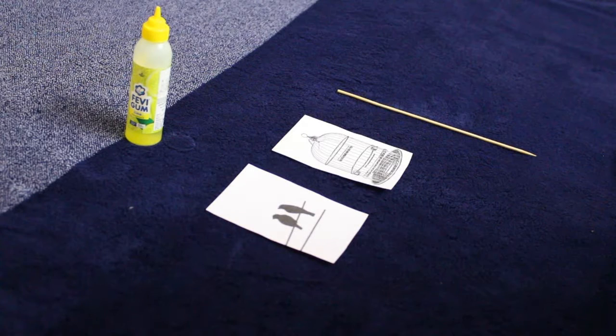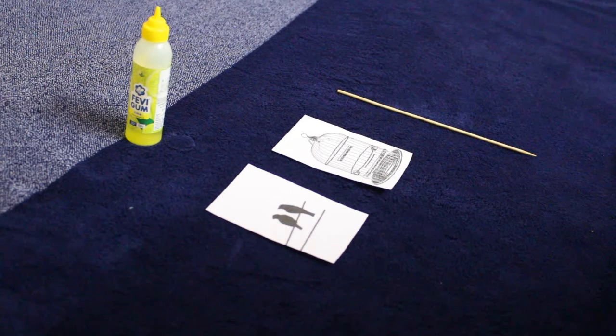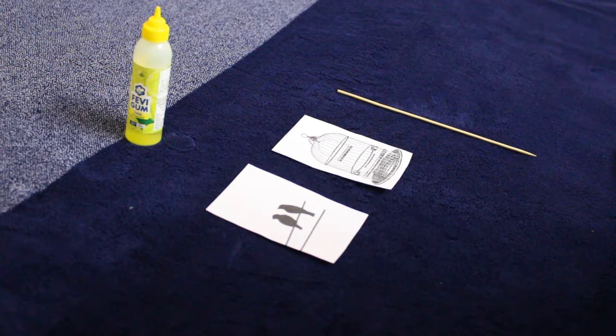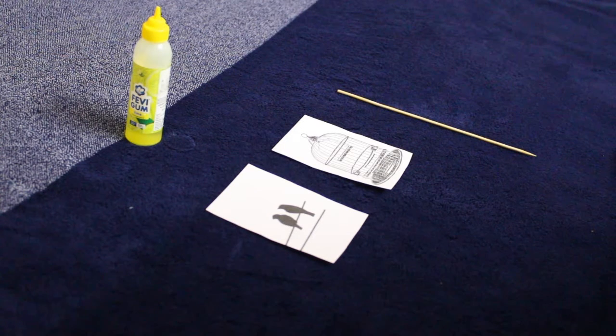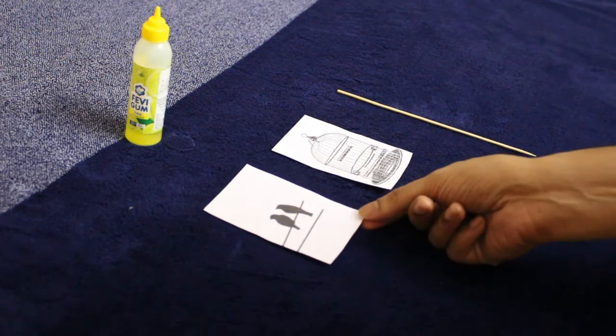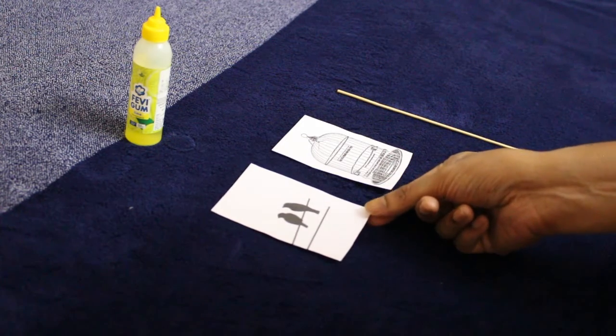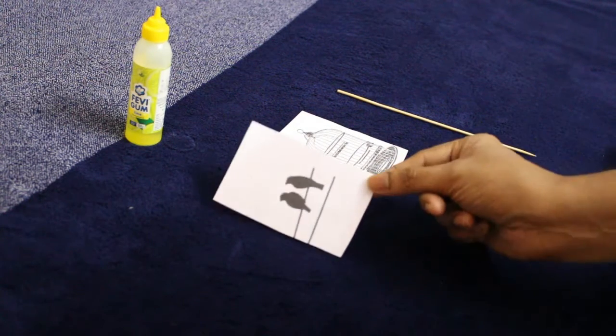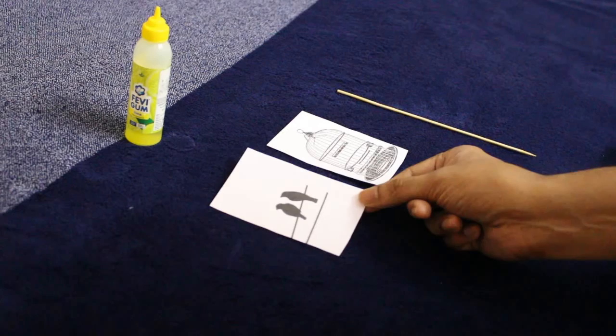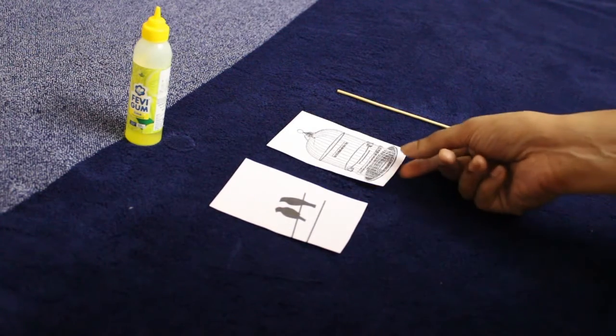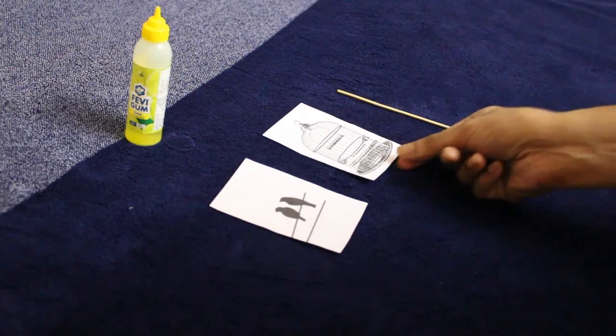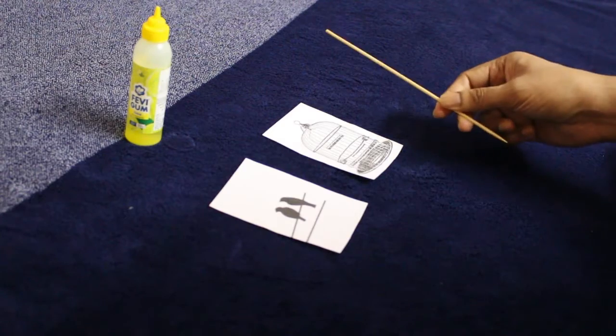Hello everyone, today I'm going to show you a simple experiment on optical illusion. For this we need two simple drawings. I have one drawing of two birds sitting on a rope and the birdcage, and I have one stick and glue.